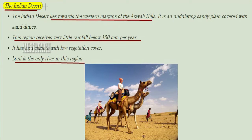The Indian desert lies towards the western margins of the Aravalli Hills. It is an undulating sandy plain covered with sand dunes. This region receives very little rainfall — below 150 millimeters per year — and has an arid climate with low vegetation cover. Luni is the only river in this region.